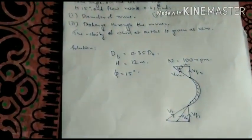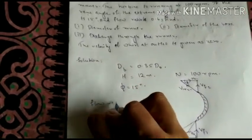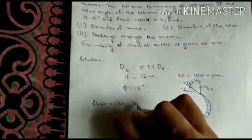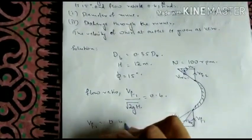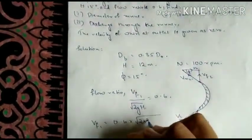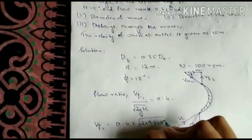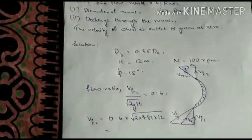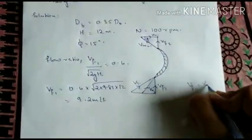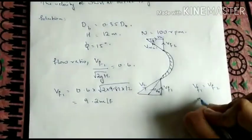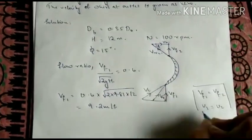Now flow ratio is given to us. What's the formula for flow ratio? VF1 by root of 2GH, that is given as 0.6. So now from this we can find VF1: 0.6 into root of 2 into 9.81 into 12. Now from this we will get it as 9.2 meters per second. Now another very important point which we already discussed is that VF1 and VF2 are equal, U1 and U2 are equal for a Kaplan turbine.